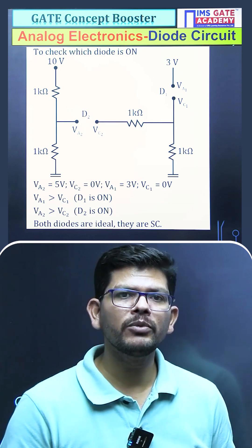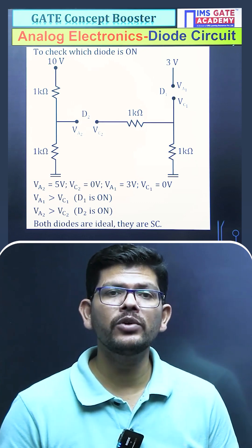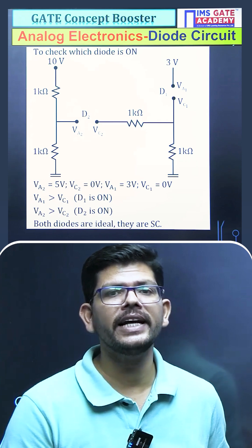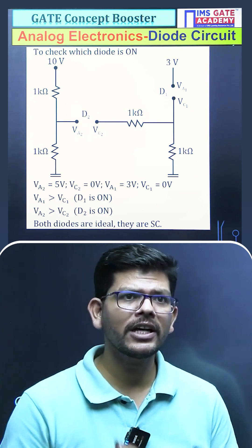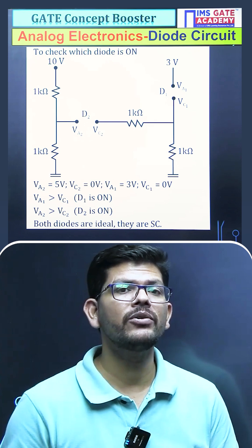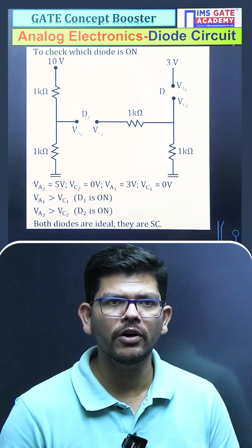So what you can see is that across both the diodes D1 and D2, the voltage across the P side is more than the voltage across N side. So both the diodes will be on. This is how we figure out which diode is on here. So both the diodes are on.